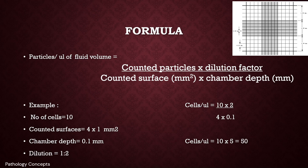For example, if 10 cells are counted in 4 large outside corners, the counted surface is 4 × 1, chamber depth is 0.1, and dilution is 1:2. The formula gives: (10 × 2) / (4 × 0.1) = 10 × 5 = 50. Therefore, total cells equal 50 per microliter of CSF.